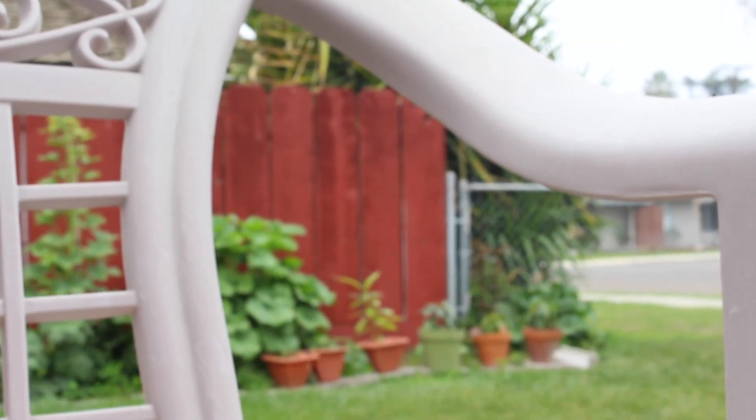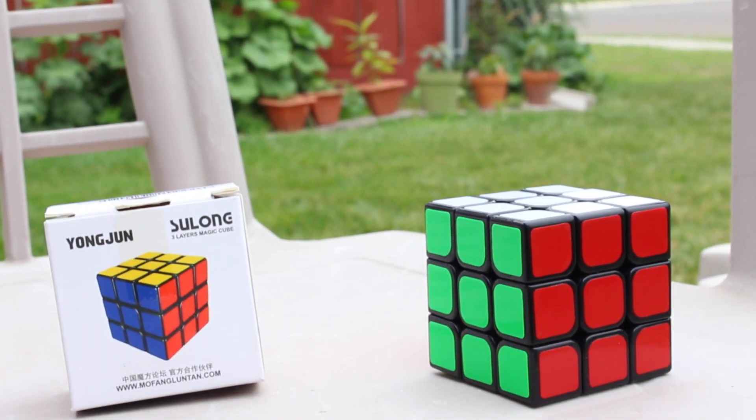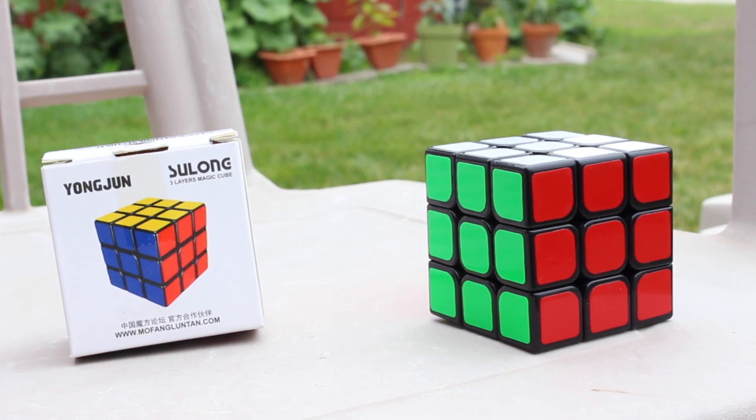Hey what's going on guys, Joel here. Today I wanted to share the Rubik's Cube that I ordered from Amazon. This is apparently the YJ Sulong.